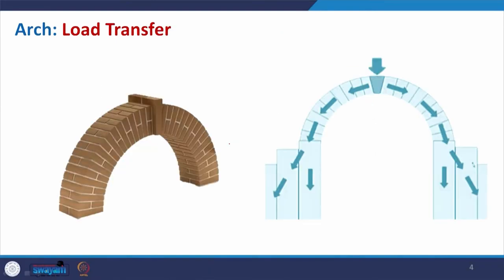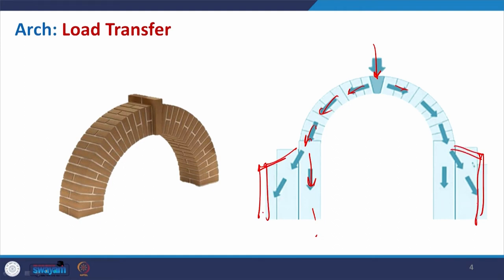The load imposed on the arch will be transferred symmetrically to the ground. Sometimes if the wall is not capable of carrying it, we can use flying buttresses or other supports to distribute the load — and this symmetry is very important. Here also, in a 3D form, you can see how the bonding is made, and in this case, this is basically your rise.